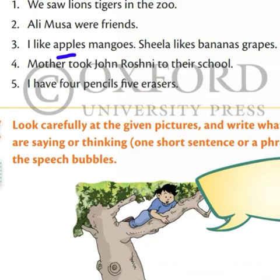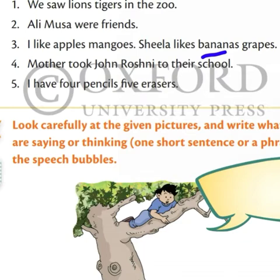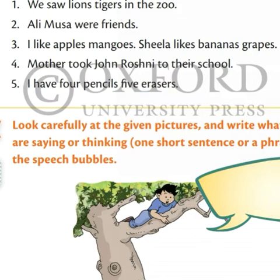On which place will we use 'and'? You can see — between apples and mango. I like apples and mangoes. See next: Sheila likes bananas and grapes. Between these two words grapes and bananas we will use 'and', because two things are mentioned, therefore we use 'and'.